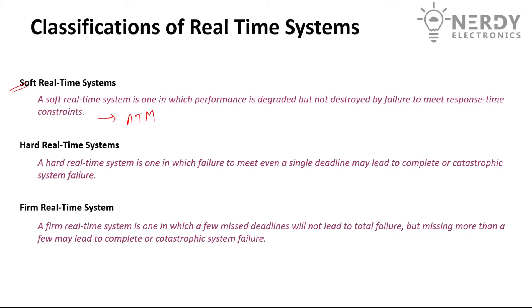Hard real-time systems, on the other hand, are ones where failure to meet even a single deadline may lead to complete or catastrophic system failure. For example, airplane navigation — the system must generate the output within the given time frame because many other systems depend on it, and failing to meet the deadline may result in a crash. Those systems are classified as hard real-time systems.